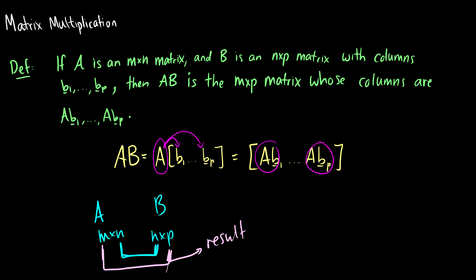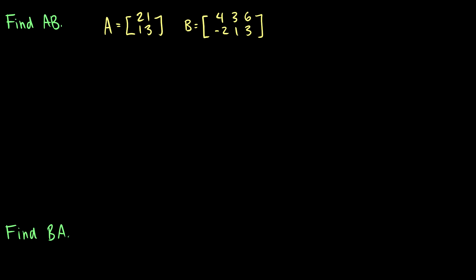Let's take a look at an example. So A is the matrix [2, 1; 1, 3] and B is the matrix [4, 3, 6; -2, 1, 3]. Let's multiply them together.